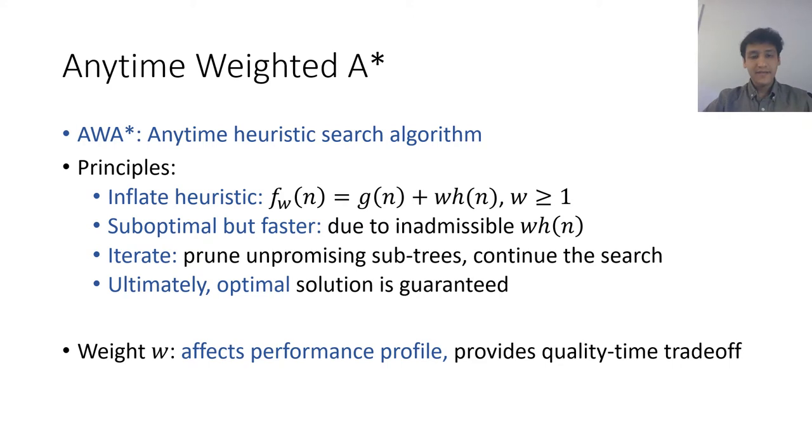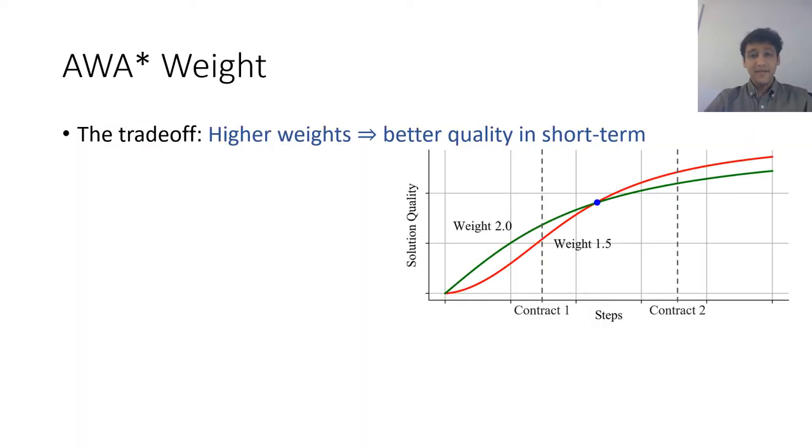In Anytime Weighted A star, the weight affects the performance profile by providing a trade-off between quality and time. With a higher weight, better quality solutions are found in the short term compromising the long term quality. By quality, I mean something that is inversely proportional to the cost of a solution.